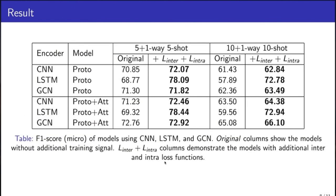We first evaluate metric-based few-shot learning models including prototypical network, relation network, and matching network. We find that prototypical network is the best model. You can find the detailed experiments in the paper.